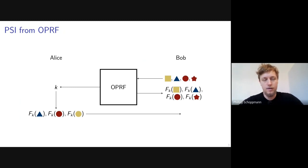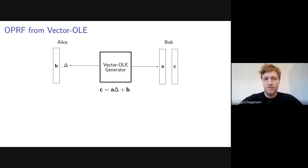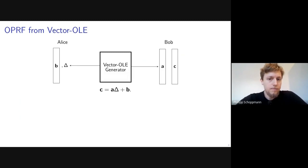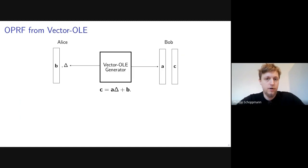The basic protocol underlying our OPRF construction is called Vector OLE — where OLE stands for oblivious linear evaluation. It is a correlation generator between two parties. The generator outputs vectors a, b, and c, and a scalar delta. Alice gets b and delta; Bob gets vectors a and c. These are pseudorandom but correlated such that c equals a·delta plus b. You can think of this as an additive secret sharing of a vector-scalar product, where c and minus b are the secret shares.